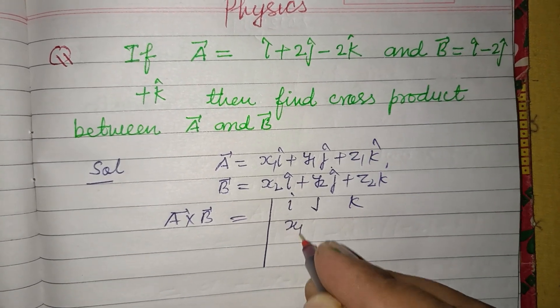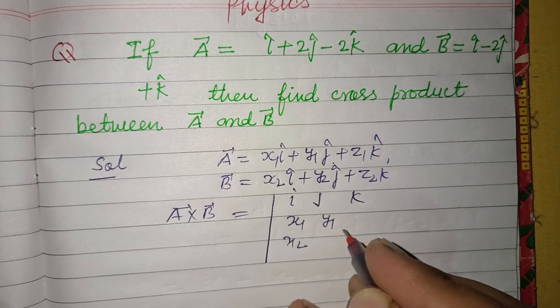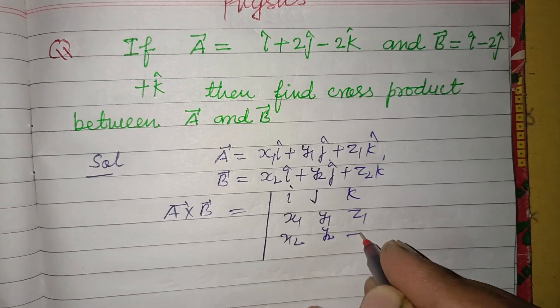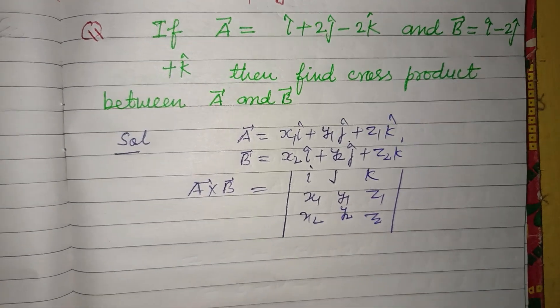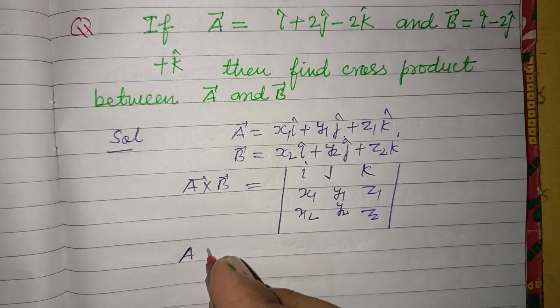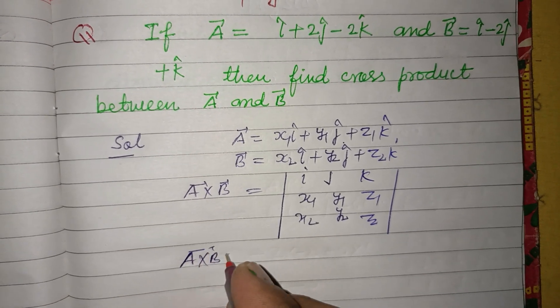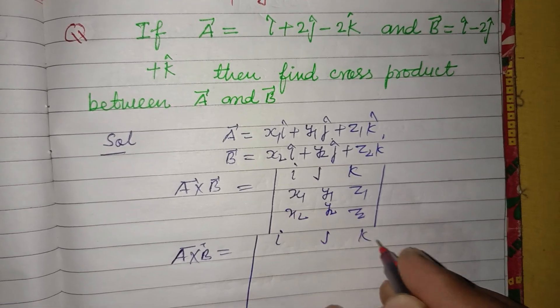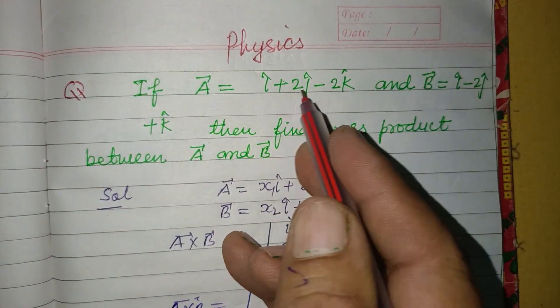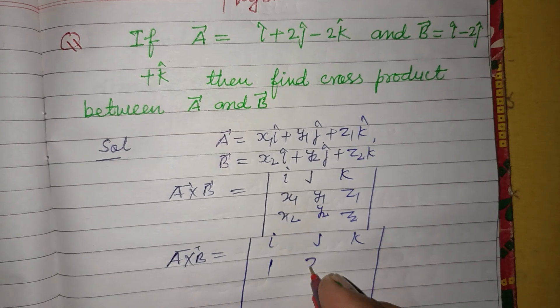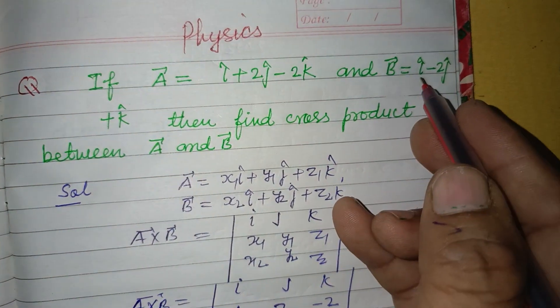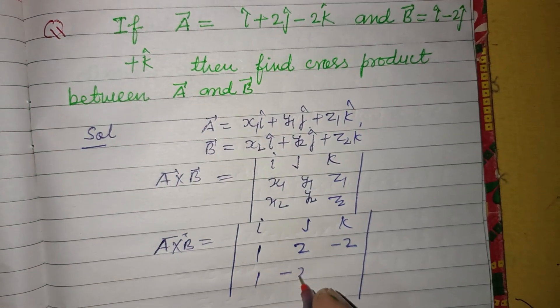...A cross B equals the determinant with i, j, k in the first row, x1, y1, z1 in the second row, and x2, y2, z2 in the third row. Similarly, using this concept we find A cross B. So i, j, k, putting the values: 1, 2, minus 2 in the second row, and 1, minus 2, 1 in the third row.